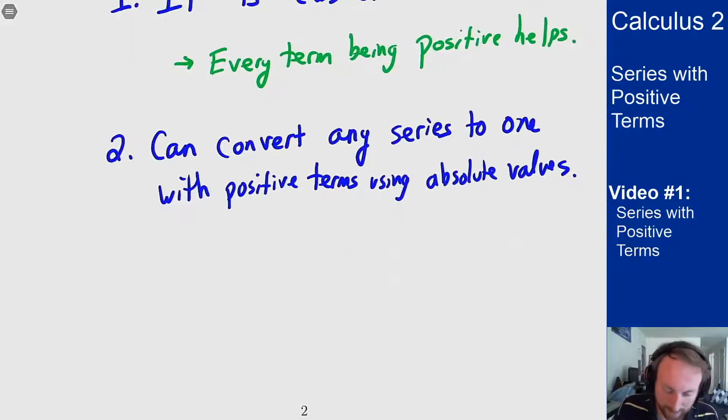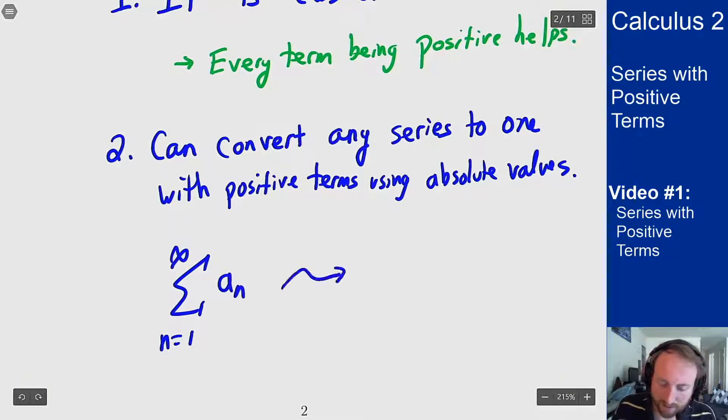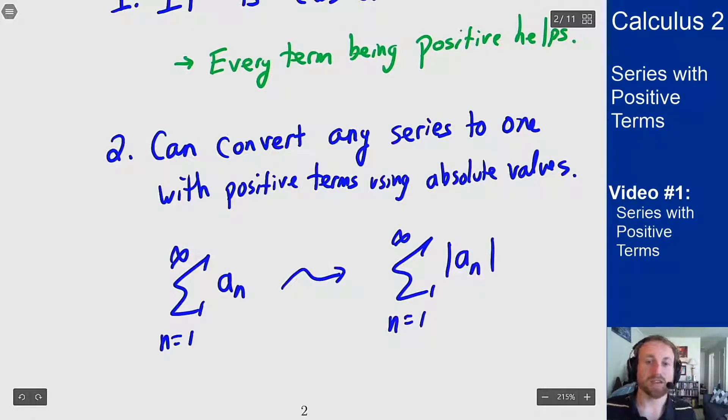And by that I mean if we have the sum from n equals 1 to infinity of a_n that's not all positive terms, I can instead look at the sum n equals 1 to infinity absolute value of a_n that now has all positive terms. I can try to analyze that one instead and we'll see later how these two things relate to each other.